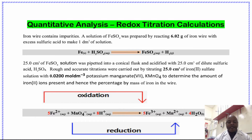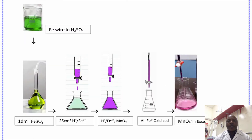We have the iron wire, potassium manganate(VII), dilute sulfuric acid, and other reagents. The first stage in this experiment is the preparing of iron(II) sulfate by dipping the iron wire into the sulfuric acid solution in a beaker.